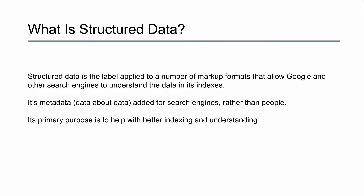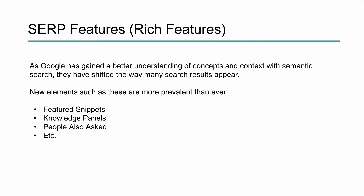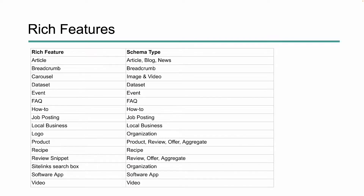Structured data has been used by Google to enable what are called rich features or search features. These are those really cool boxes that you see — maybe it's a featured snippet, maybe it's a knowledge panel, a 'People also ask' box right within the search engines that give you information. Most of this information is being pulled from structured data, and Google gives us guidelines if we want to rank for certain rich features.